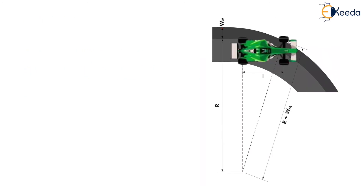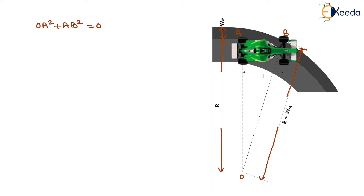In this diagram, the mechanical widening is shown. The radius of the curve is represented by capital R, and the outer distance is R plus WM, that is, radius of curve plus mechanical widening. From this triangle, we name the vertices as O, A, and B. In triangle OAB, OA² + AB² = OB². The value of AB is the length of the vehicle, represented by small l. So OA = R, AB = l, and OB = R + WM.